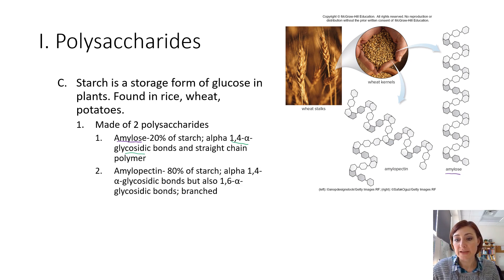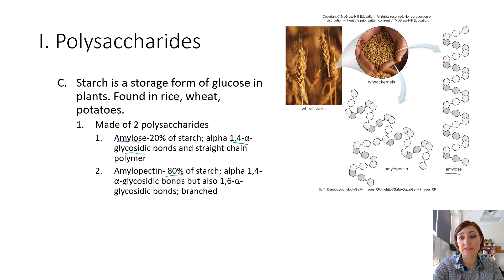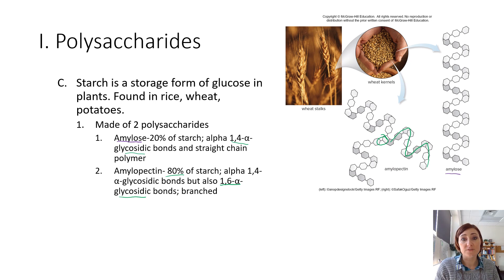The other plant storage form of glucose is amylopectin, which makes up 80% of all starch. Amylopectin has the same basic structure as amylose — it starts as a straight-chain polysaccharide with alpha-1,4 linkages — but it also has alpha-1,6 glycosidic linkages, which are the ones that provide the branching in the structure.